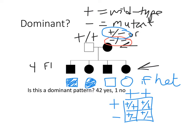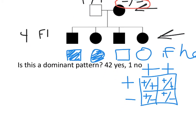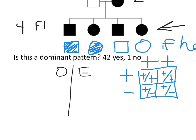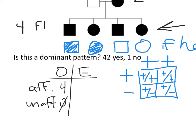The big question — the chi-square question — is: are those two results statistically significantly different? You could do a chi-square test. So we have observed values and expected values. Our categories are affected and unaffected. We observed four affected and zero unaffected. We expect two and two. So is that p-value bigger or smaller than 0.05 after you do the chi-square test?